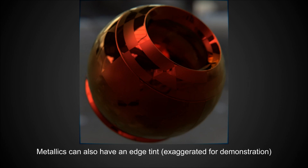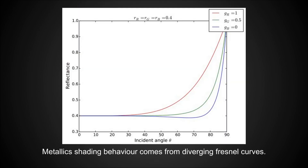However, they can also have an edge tint, and this is one of those things that is often overlooked. Obviously I've exaggerated this for demonstration purposes — it's physically there but is very rare. It's rarely visible in materials unless you're dealing with a material that's very specifically engineered to look a specific way.